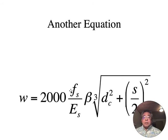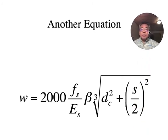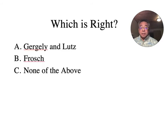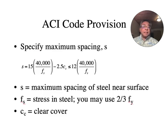Here's another equation developed by other researchers that was proposed. And so, you know, when you have multiple researchers proposing different equations, especially when I'll show you the graph, these equations actually do different things. The curves are almost opposite. You'll see in a little bit. You wonder which of these is right, Gergely-Lutz or Frosch or none of the above. And it's sort of none of the above or we don't know.